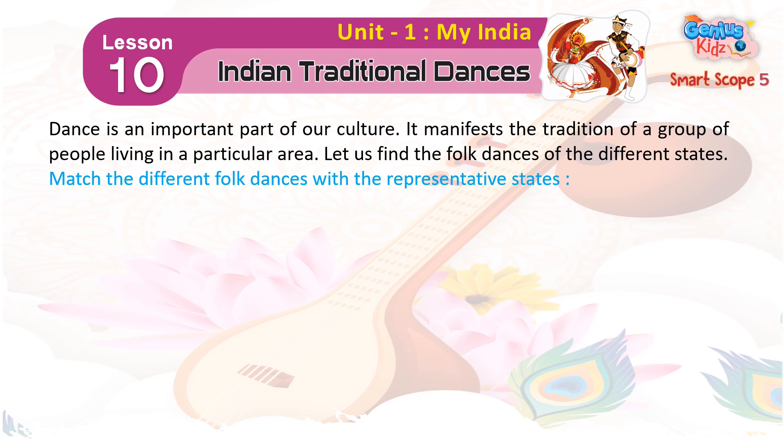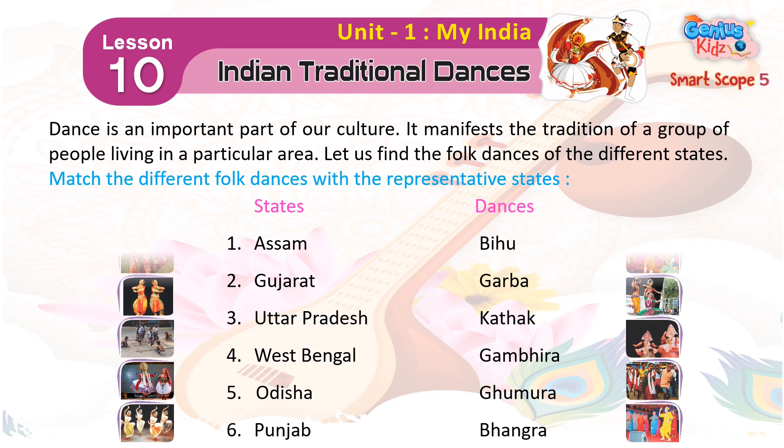Match the different folk dances with the representative states. 1. Assam — Bihu. 2. Gujarat — Garba. 3. Uttar Pradesh — Kathak. 4. West Bengal — Gambhira. 5. Odisha — Ghoomad. 6. Punjab — Bhangra.